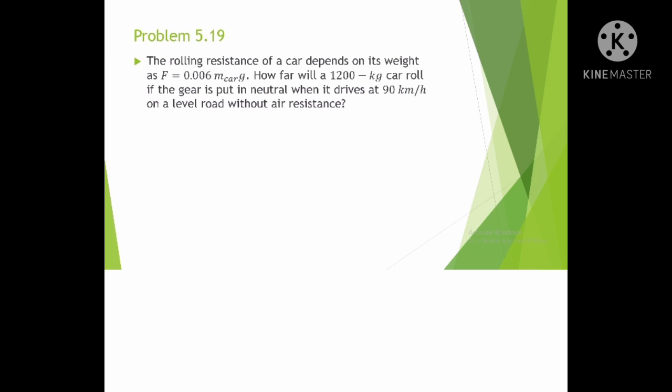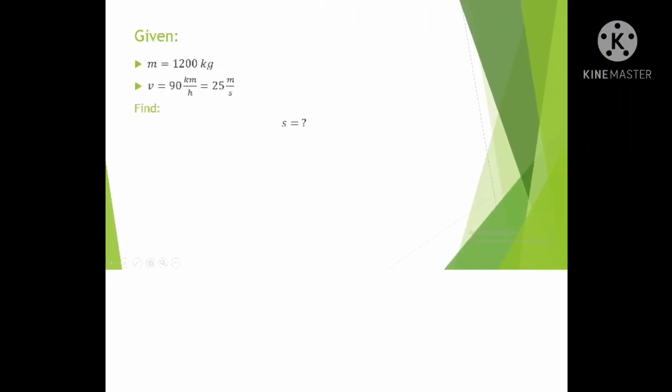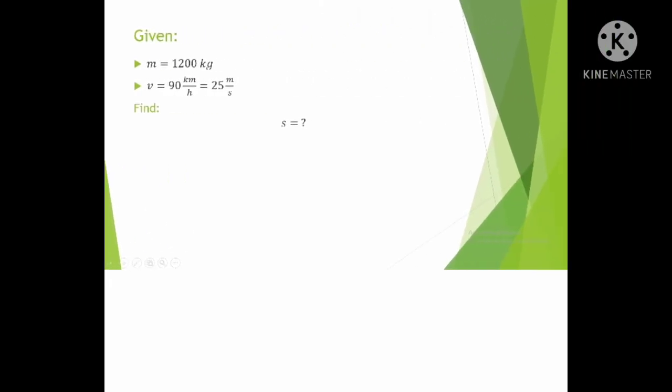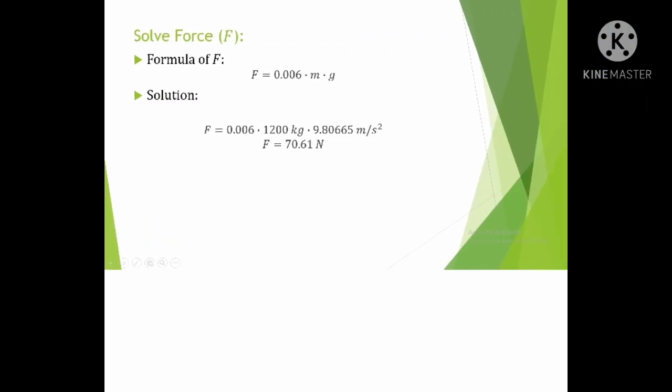In this problem we are given m equals 1200 kilograms, velocity v equals 90 kilometers per hour, converting it into 25 meters per second. Now we need to find the displacement s.